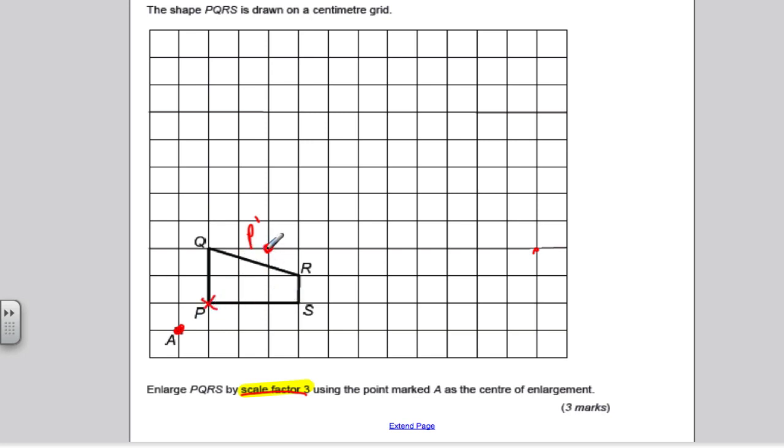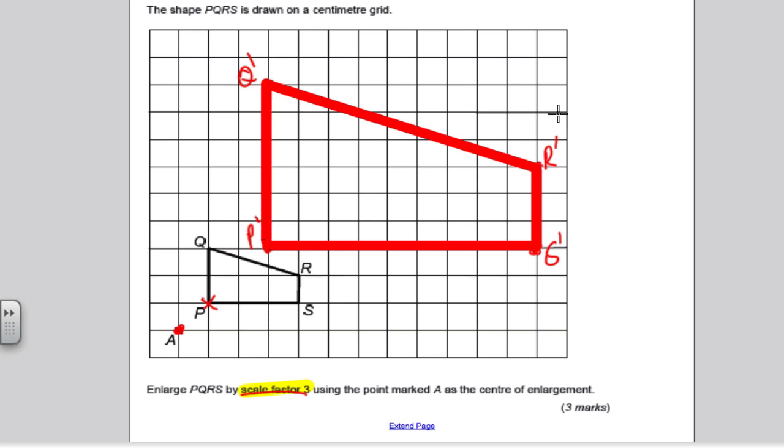This shape is 2 up, so this must be 6 up. That would be my new Q. And this from the S is 1 up, so it would be 3 up. That would be my new R. And then I would just draw in the lines, and there's the enlargement. Easy. Again, 3 marks, and that's extremely easy.